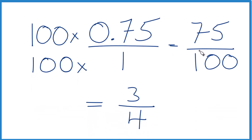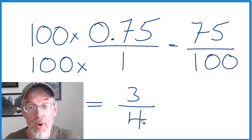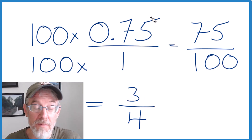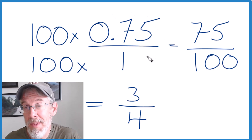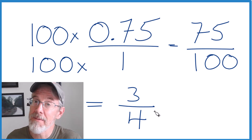So in answer to our question, the decimal 0.75 equals the fraction 3 fourths. They are equivalent — if you divided 3 by 4 on your calculator, you would get 0.75. They're the same thing, just written a little bit differently.